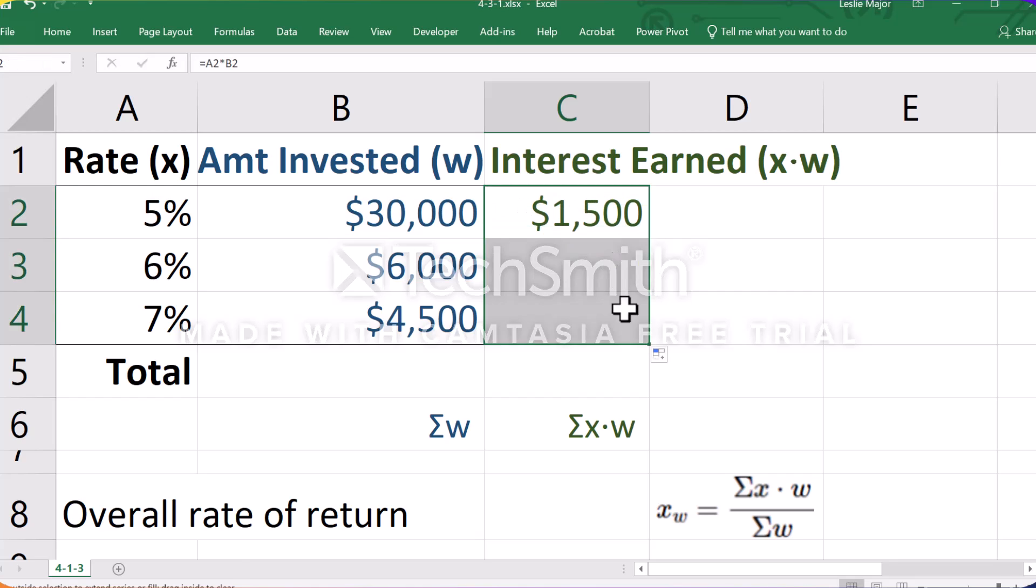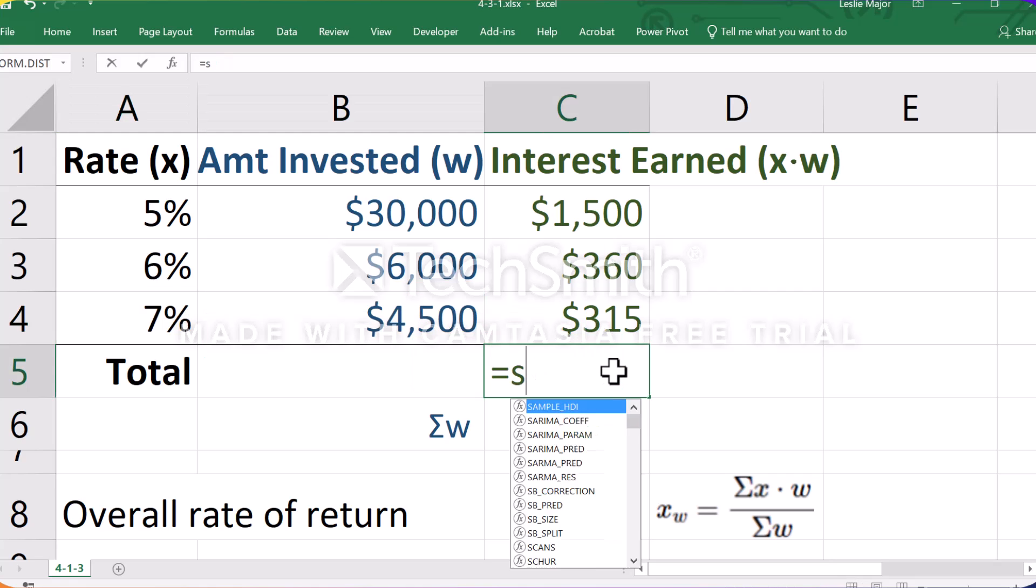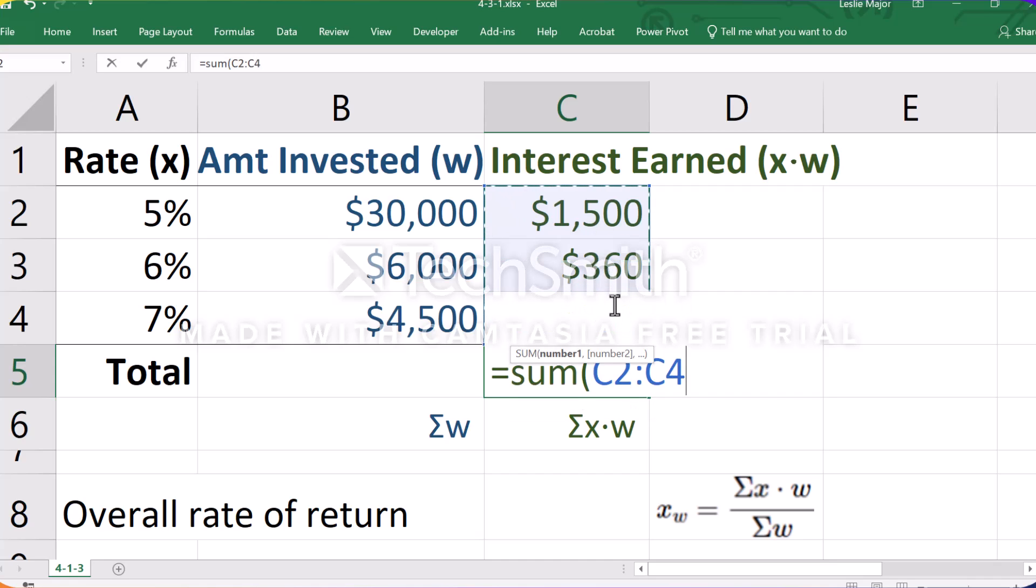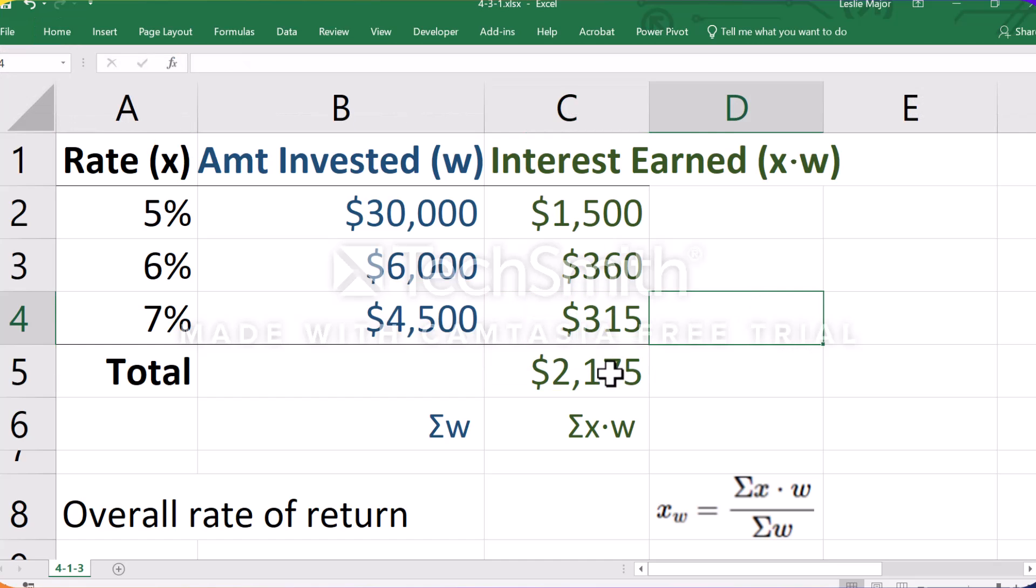I'm going to pull this down to do the same calculation for each of the amounts and the rate of return on them. I'm going to use an equals SUM call to add up all of those amounts of interest I earned. That totals to $2,175. So that's the total amount of interest I would earn if I earn these rates of return on these dollar amounts.